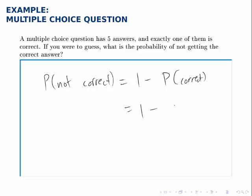Well, there are five total possibilities for what you could guess. One of them is correct, so one minus one fifth is four fifths. So there's a four fifths chance that you won't get the correct answer if you randomly guess.